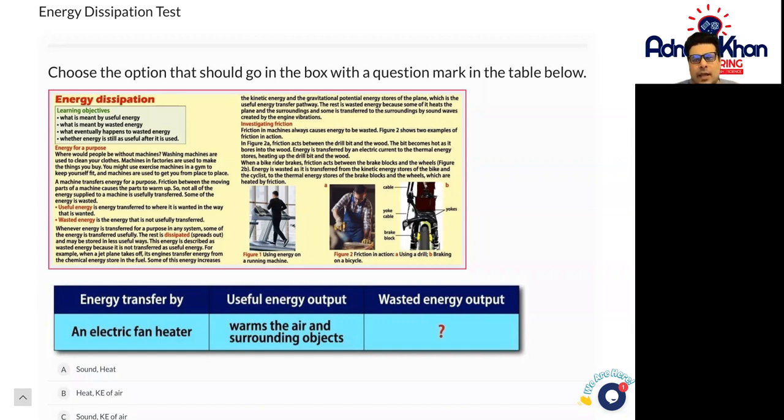For example, energy cannot be created or destroyed, but it can be transferred and dissipated or stored in slightly different ways.